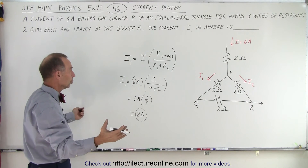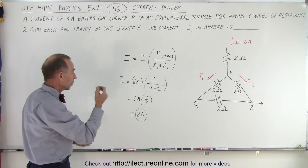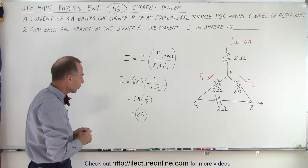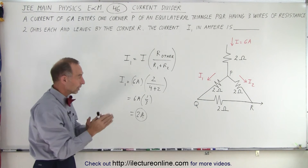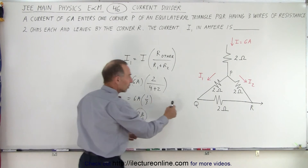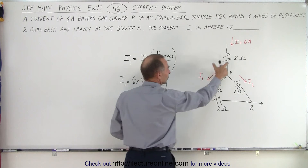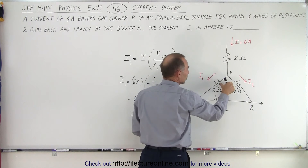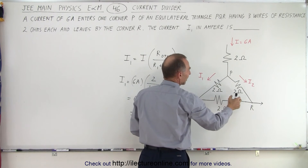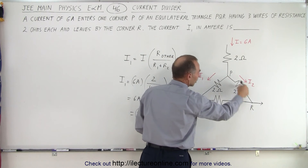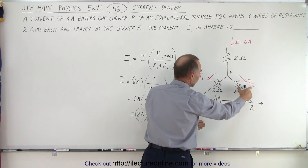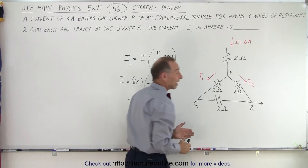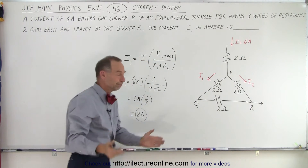That's the way we should do that — that's simply what we call a current divider. We calculate the current in this branch by taking the current entering the two branches, times the resistance in the other branch, divided by the total resistance of both branches added together.